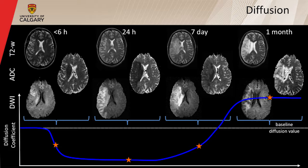Less than six hours into a stroke, we see diffusion changes, some ADC changes indicating a decrease, and some enhancement on DWI — those bright spots are referred to as the light bulb. At 24 hours, the light bulb is much brighter on DWI, there's a very large region of decreased ADC on the ADC map, and some minor changes on T2. One week after stroke — this is an untreated patient — you can still see DWI and ADC changes, though some areas have started to normalize, and we're starting to see extensive T2 changes.